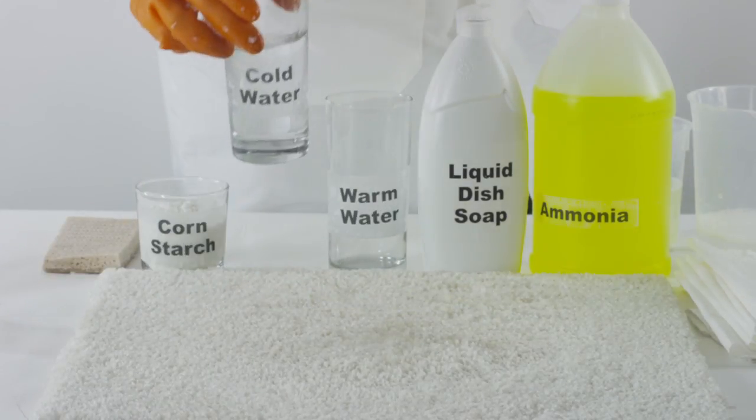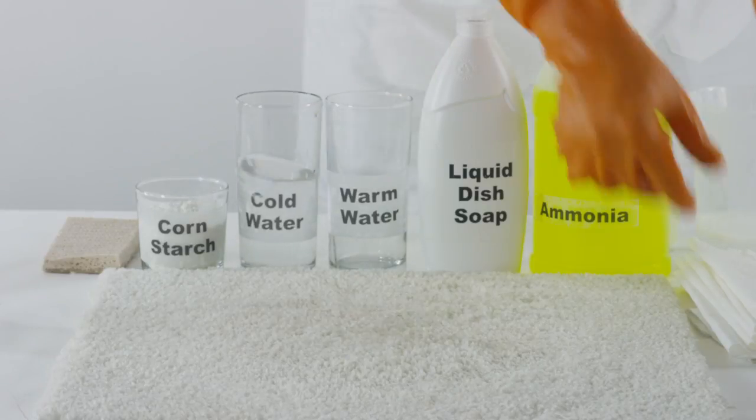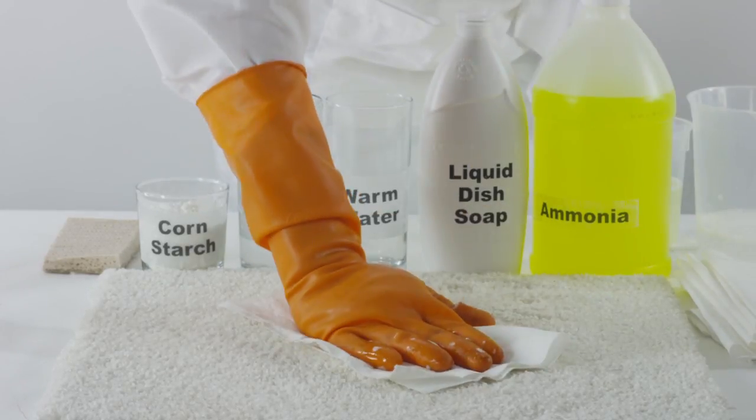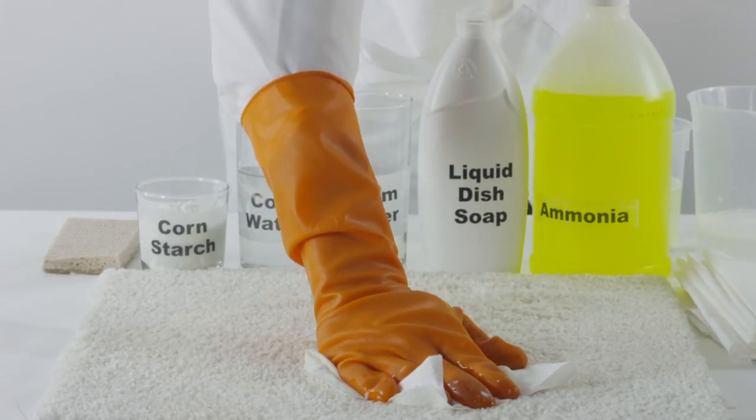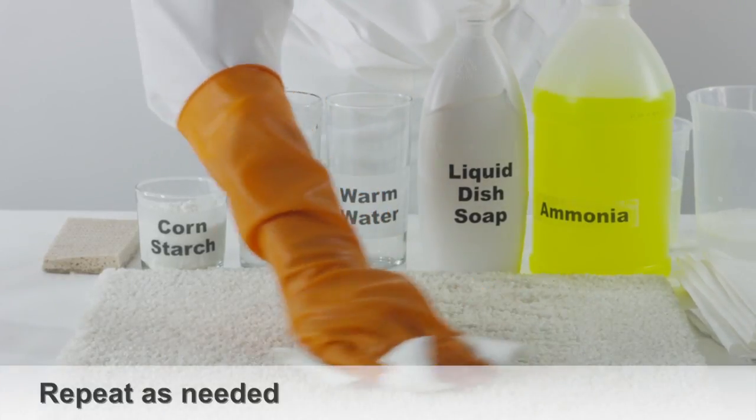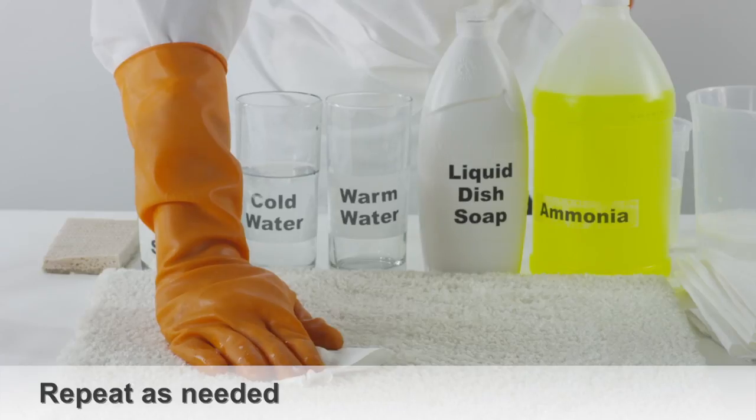If you're looking for another do-it-yourself method, take a cloth, soak it in cold water, and scrub the area of the carpet where the milk soaked in. You can repeat this step as many times as you need until you've soaked up all of the milk from the carpet.